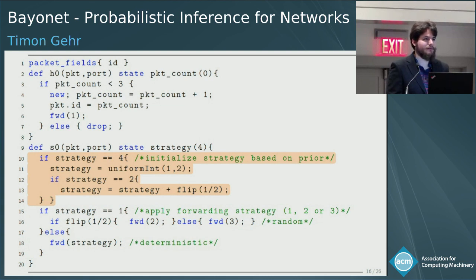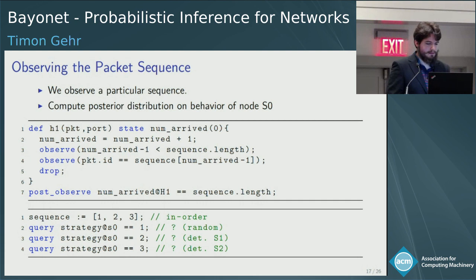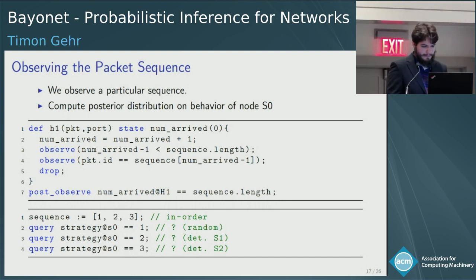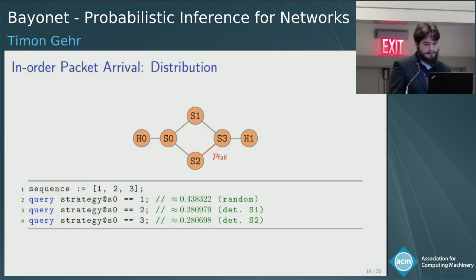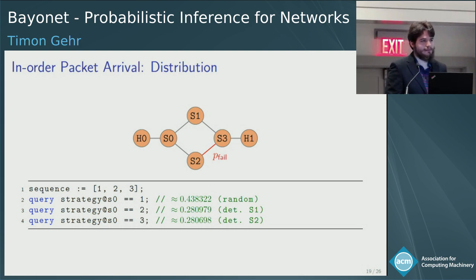We initialize the strategy based on the prior probability: with probability one half the strategy is random, and otherwise we forward deterministically either up or down. Then we observe the sequence of arrived packets at host h1 using observed statements. One possible outcome is that the three packets arrive in order at host h1. In this case, it is now slightly less probable that the forwarding strategy was random, and a bit more likely that it was deterministic. The reason is that the packets were not reordered — if the forwarding strategy is random, it's more likely that packets get reordered, whereas if packets are always sent along the same links, there is no way for them to be reordered. This is an effect actually observed in real networks.